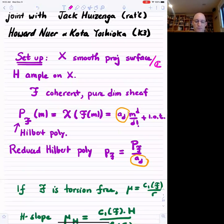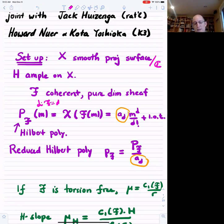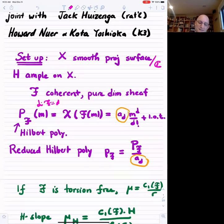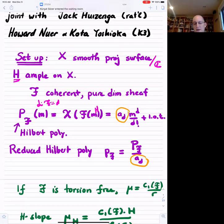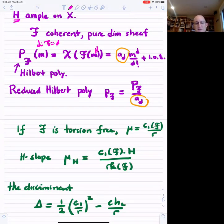If you have a coherent pure-dimensional sheaf, you can look at its Hilbert polynomial. If the dimension of the sheaf is D, then the Hilbert polynomial looks like some constant times M to the D over D factorial, where M means the twist by the ample, plus lower order terms. You then define the reduced Hilbert polynomial, which is the Hilbert polynomial divided by that leading coefficient.